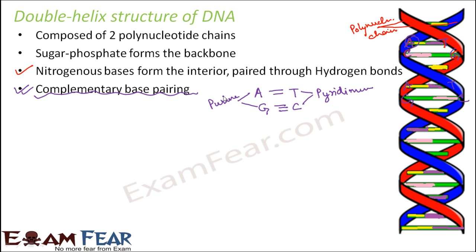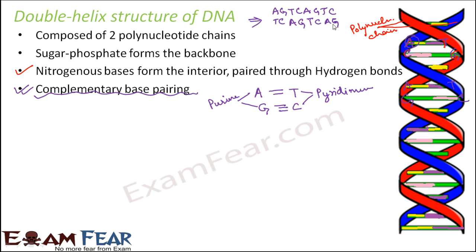If we know the sequence of one strand of DNA, we can determine the sequence of the other strand. For example, if the bases are located in a particular order on the first strand, we can work out the bases on the complementary strand. Complementary base pairing is an extremely important feature of the structure of DNA.